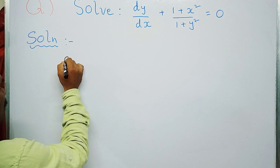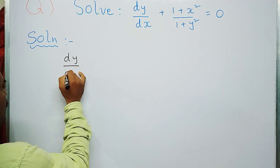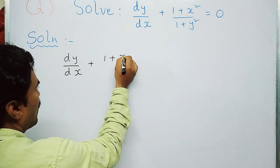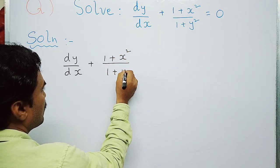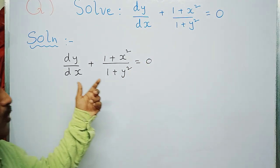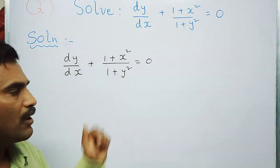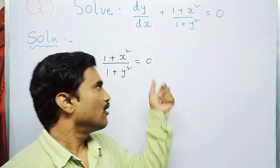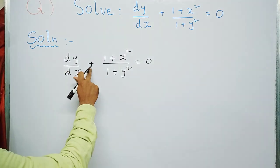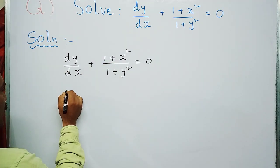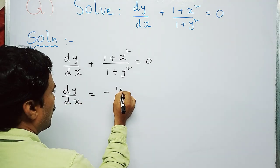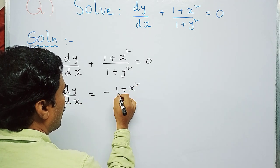Given: dy/dx + (1 + x²)/(1 + y²) = 0. The next step is to take the (1 + x²)/(1 + y²) term to the right-hand side of the equation. Taking it to the right-hand side changes the plus to minus, so we can write: dy/dx = −(1 + x²)/(1 + y²).